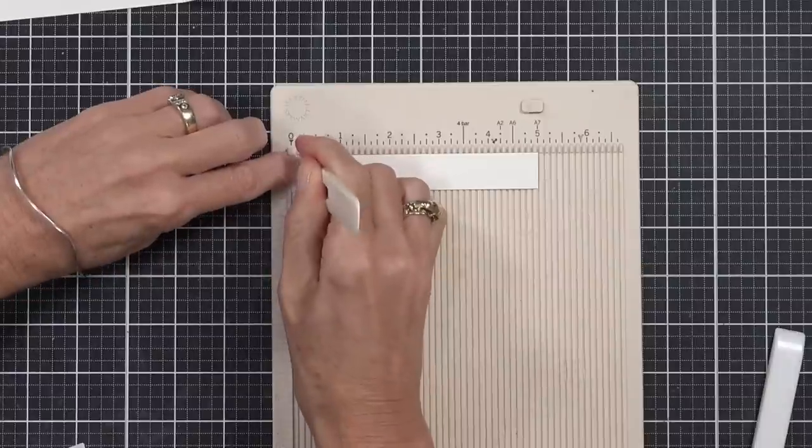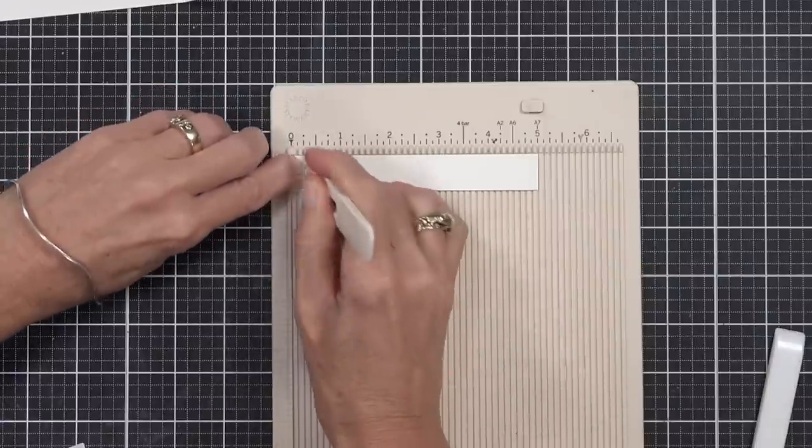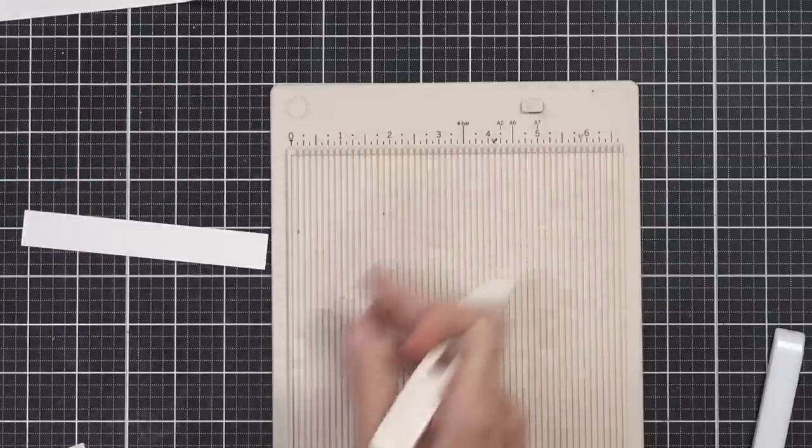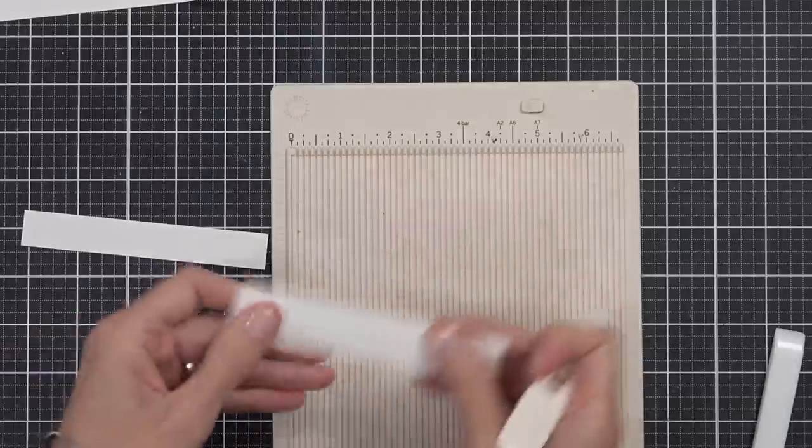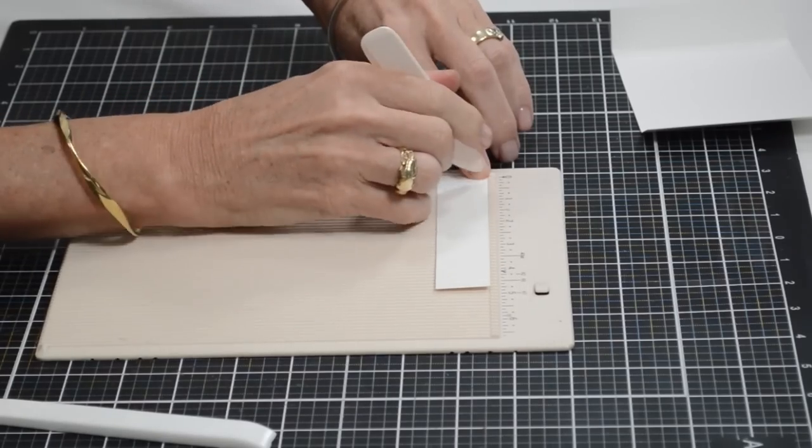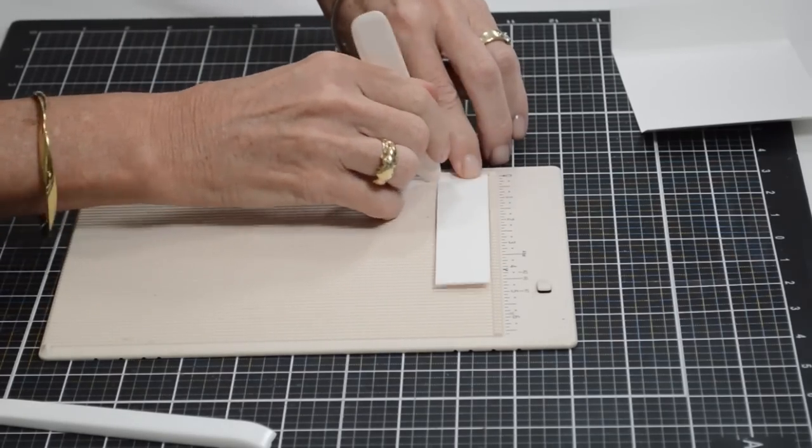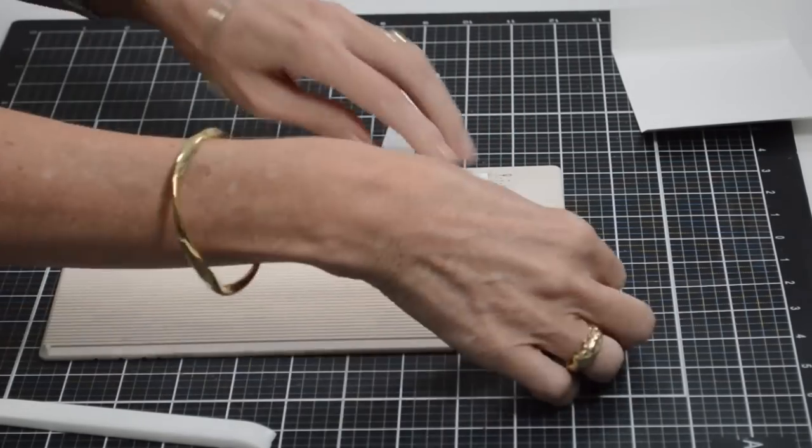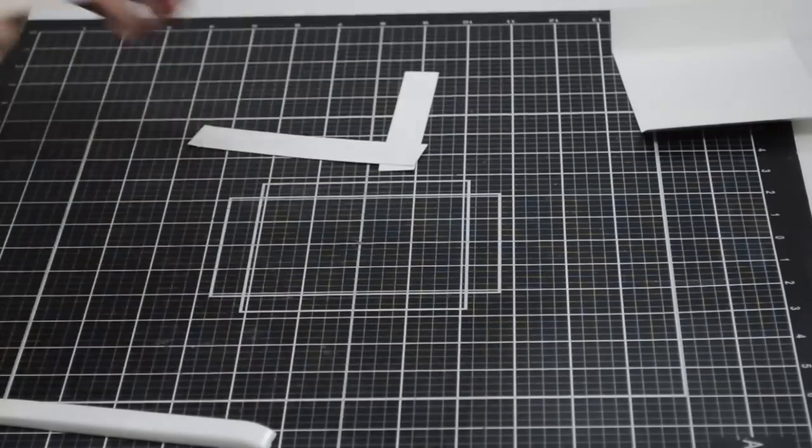This main piece of cardstock is actually cut six and a half by four inches and scored at one inch at either end. I've also got two strips of cardstock cut five inches long: one of them is one inch wide and the other is three-quarters of an inch wide, but you can actually change this up to suit your project.